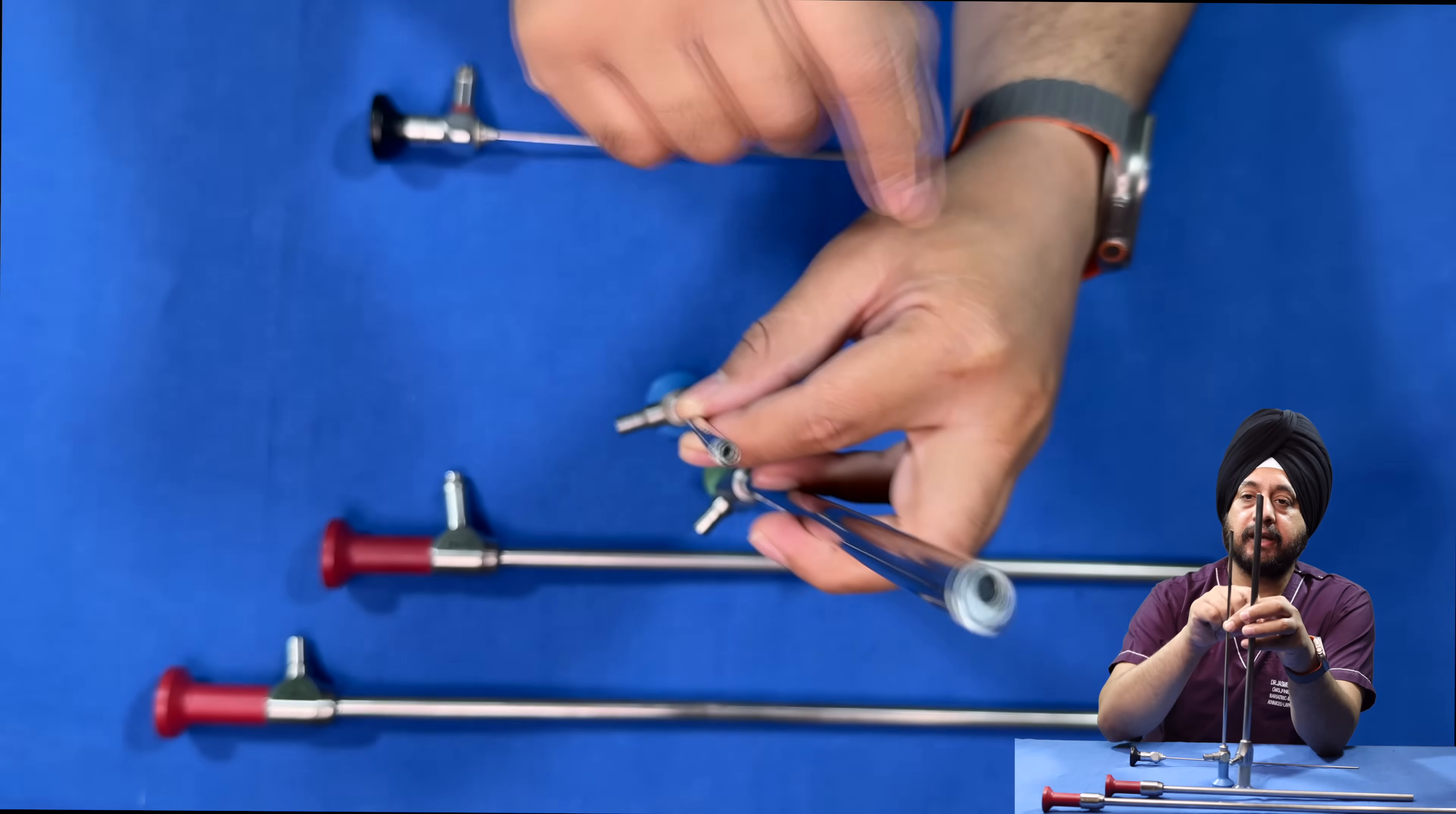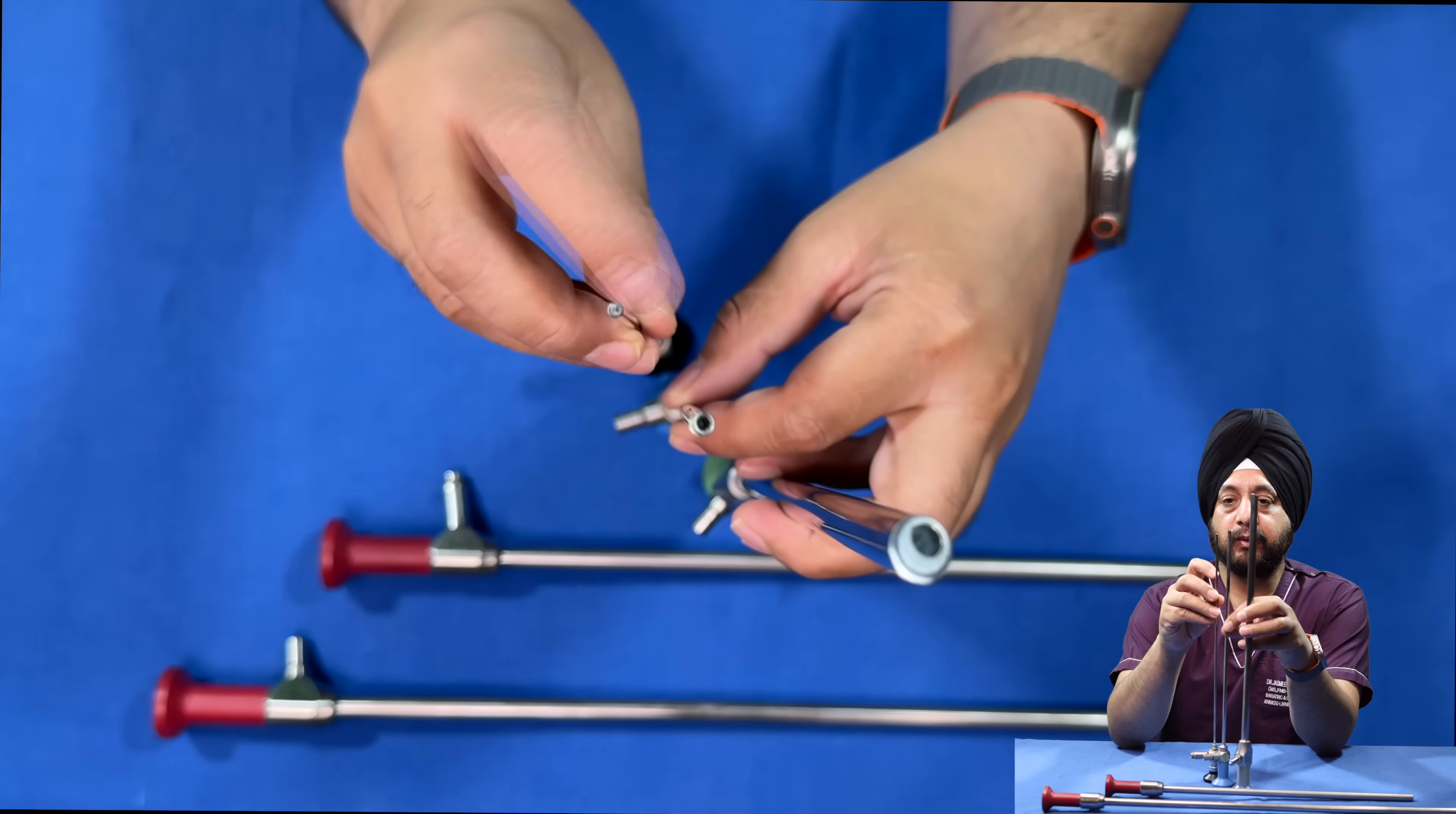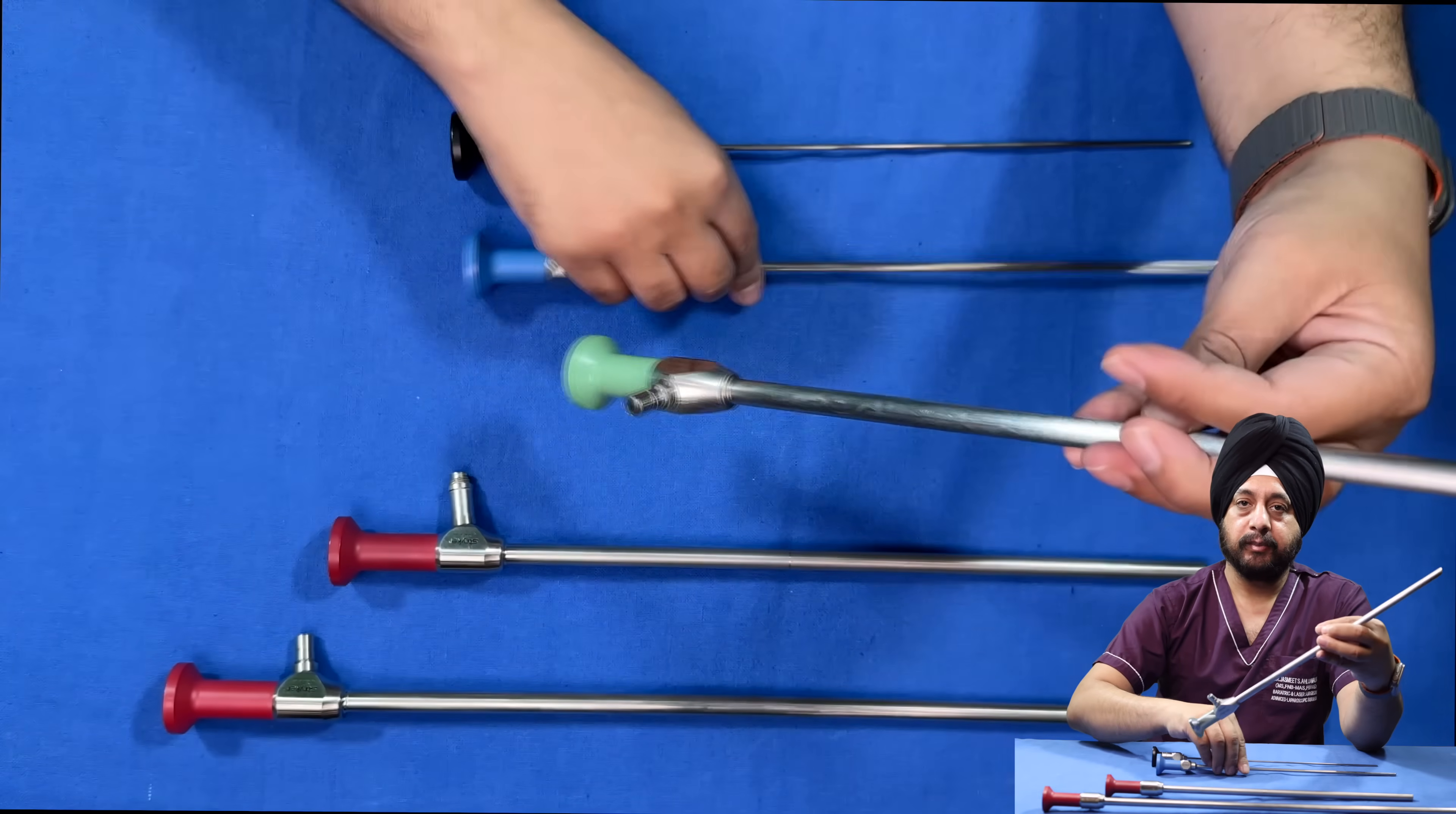The lens is much bigger in the 10 mm compared to 5 mm. With a smaller scope, the lens is even smaller and the fiber optics are even smaller, so they conduct less light. The light transmitted back is also less, so the image quality is inferior for a smaller scope.